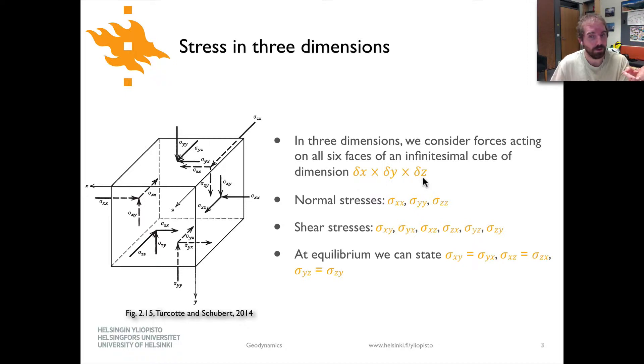We have three normal stresses sigma xx, sigma yy, and sigma zz. You'll notice on all the faces in addition to having one normal stress there are now two shear stresses because we can have shearing either parallel to one side of the face or parallel to the other side of the face along that surface.